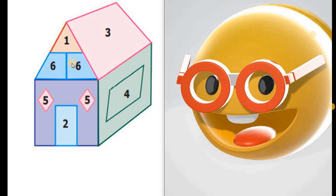Now what is number 6? You must know what this shape is. This shape is called trapezium. One pair of opposite sides are parallel, but the other two sides are not parallel. This shape is called trapezium.